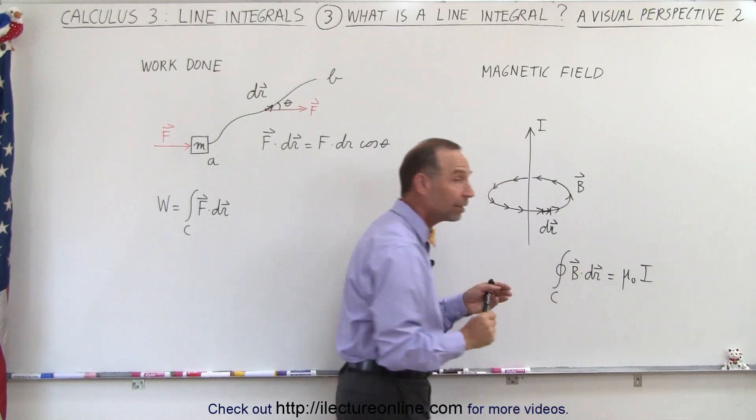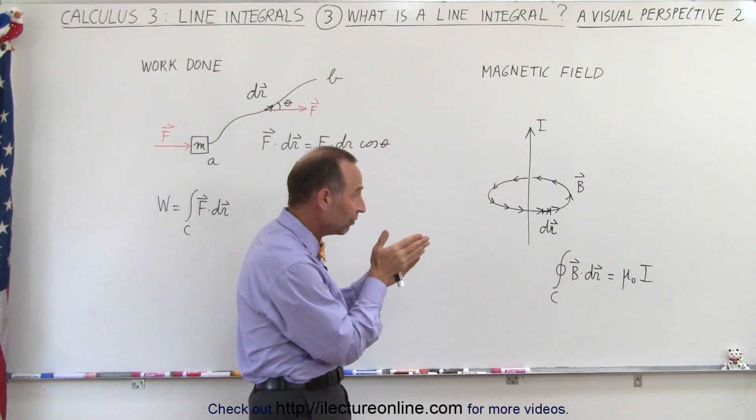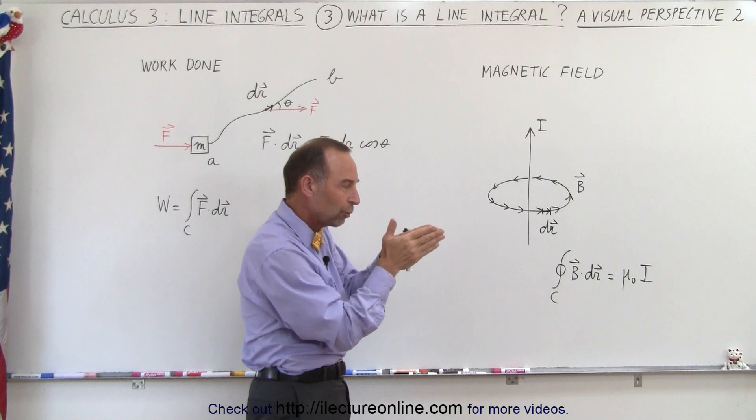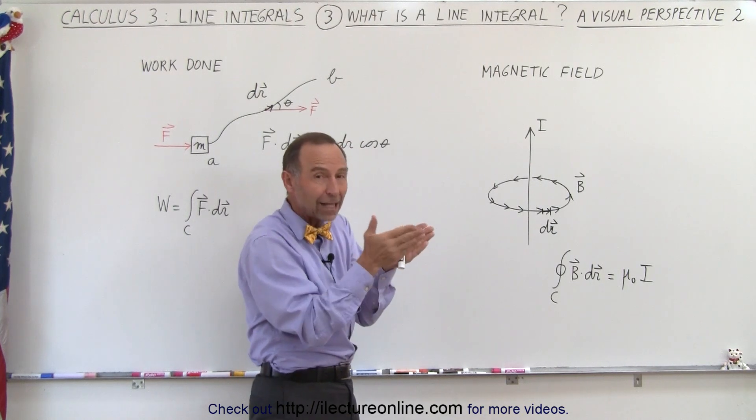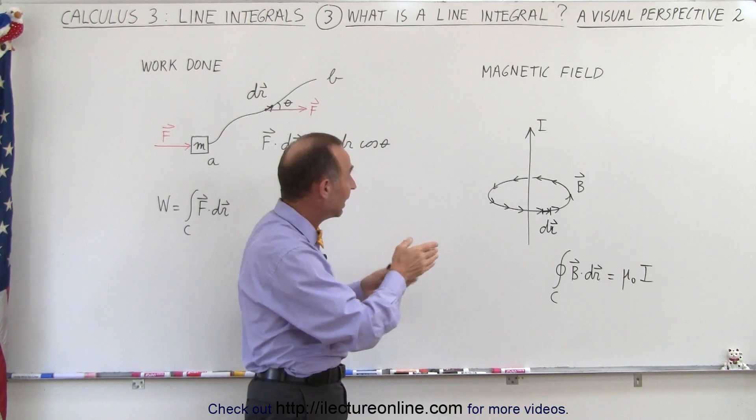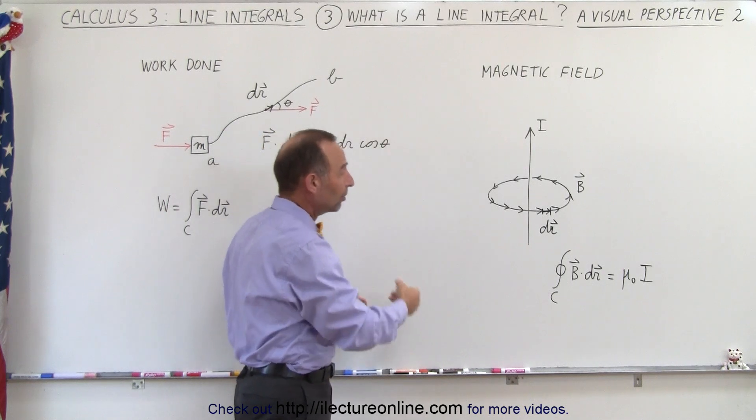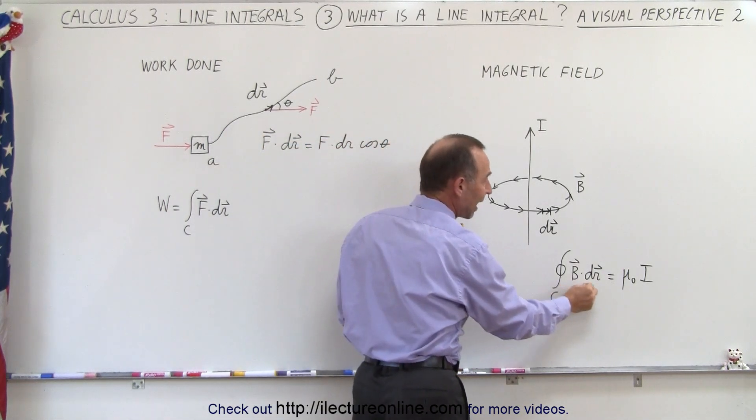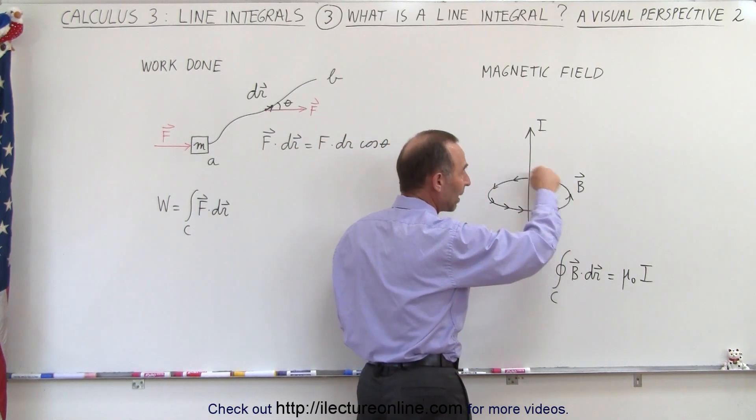It's a dot product, but in this case the direction of the magnetic field and the direction of displacement are parallel, so the angle between them is always zero. The cosine of zero is one, so it's always equal to B times the path length, which is 2πr.